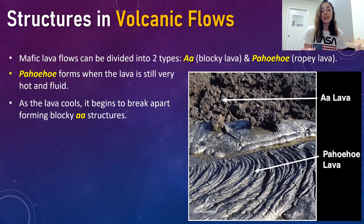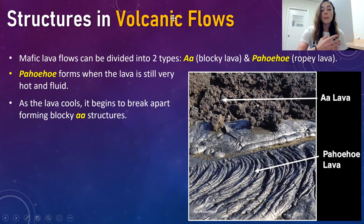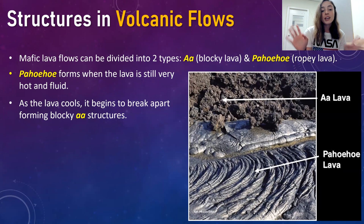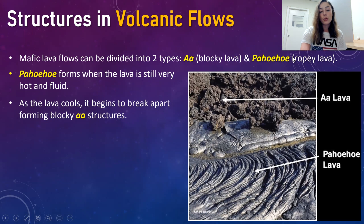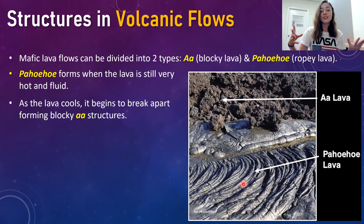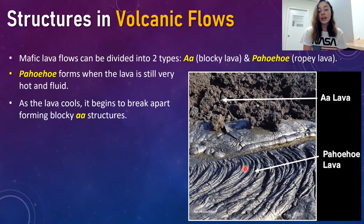Going back to volcanic structures — this video's main focus — we'll talk about volcanic flows and the structures associated with them, getting into the more mafic lava flow structures. When you have mafic lava flows, these can be divided into two main types: aa, or blocky lava, and pahoehoe, or ropey lava. They are exactly what they sound like — blocky looks like this and ropey looks like this, pretty accurate to those descriptive words.